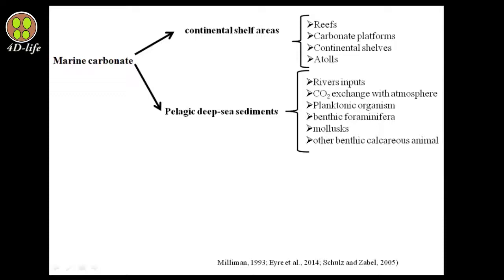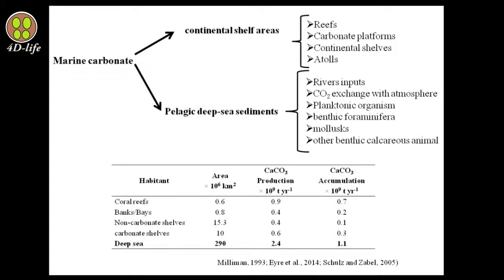Pelagic deep sea sediments include river input, CO₂ exchange with the atmosphere, planktonic organisms, benthic foraminifera, mollusca, and other benthic calcareous animals. About 80% of total carbonate at the ocean surface is removed to participate in calcium carbonate formation of marine sediments. In this table, you can see carbonate production and accumulation in various environments. As you can see, the deep sea is the main source of calcium carbonate accumulation, and after deep sea, coral reefs are the most important source.